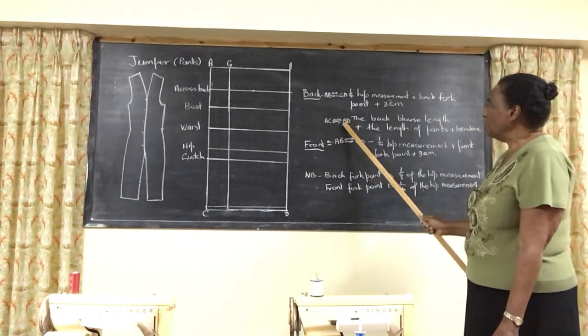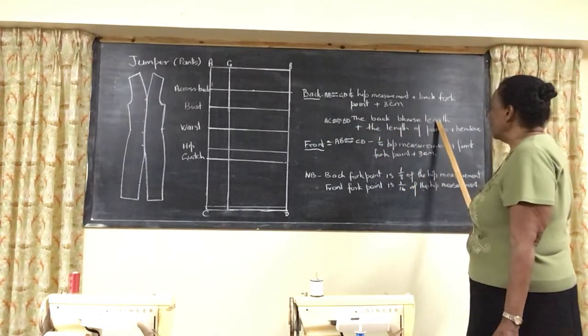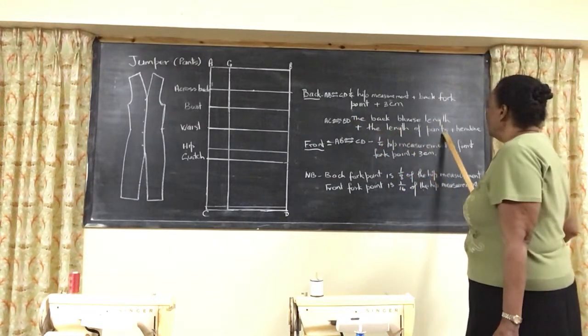And your A, C and B, D is the back blouse length plus the length of the pants and the headline.